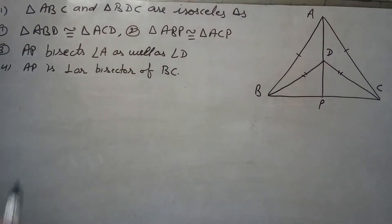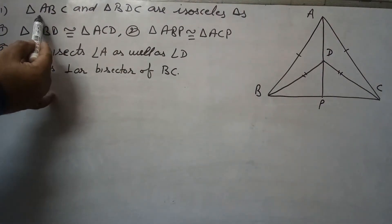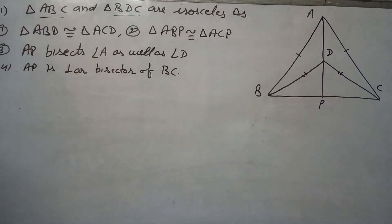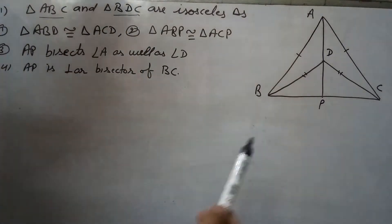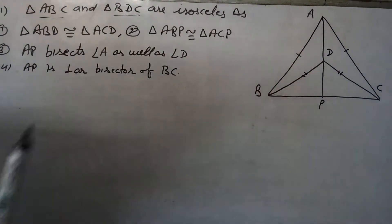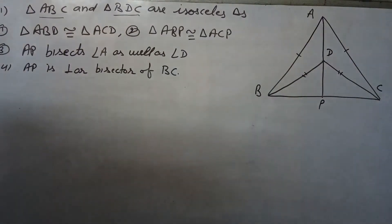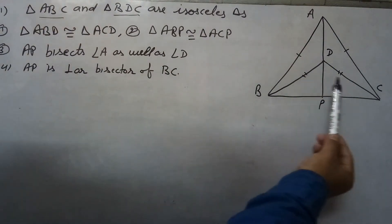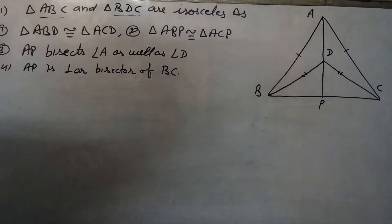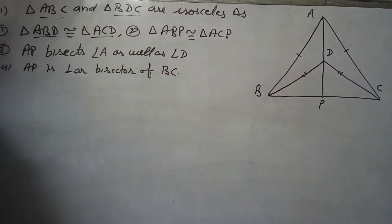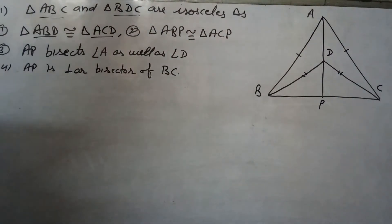In this question, triangle ABC and triangle BDC are isosceles triangles. In triangle ABC, AB equals AC, and in triangle BDC, BD equals CD. We need to prove that triangle ABD is congruent to triangle ACD.